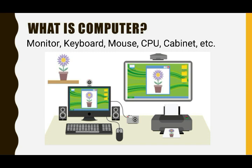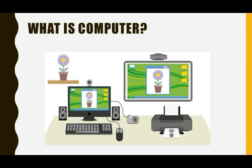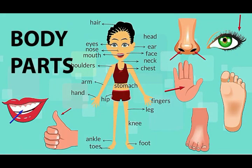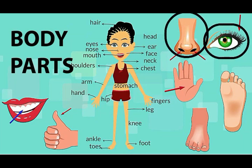It also has parts like CPU, cabinet, etc. Each part has a particular function, just like humans have different parts for different functions — like eyes to see, ears to hear, and nose to smell.